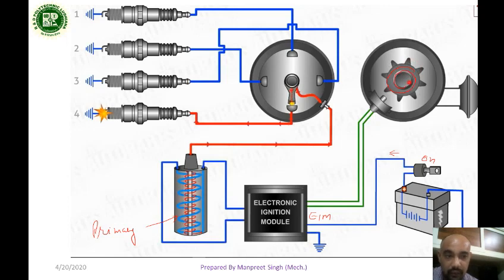If you have a rotating wheel with teeth provided, when the teeth pass the pickup point, then you can send a signal to the electronic ignition module.